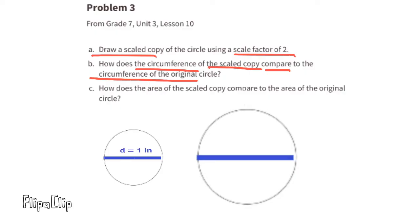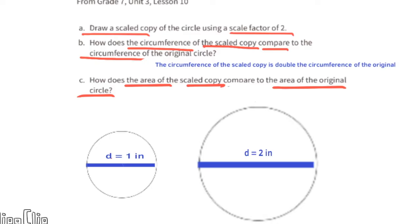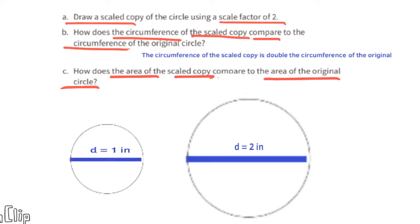Let's imagine the original circle has a diameter of one inch. To find the circumference, you multiply the diameter times pi. For the original circle: pi times one inch. For the scaled copy with a diameter of two inches: two times pi — that would be twice the circumference of the original circle.